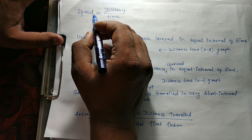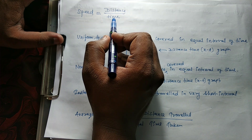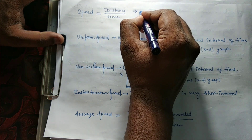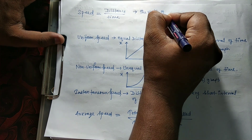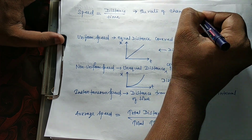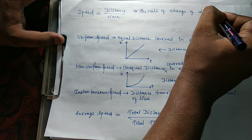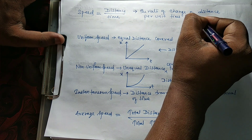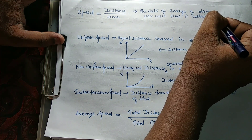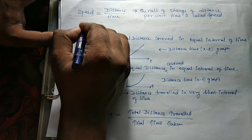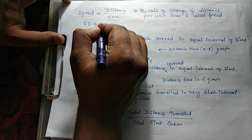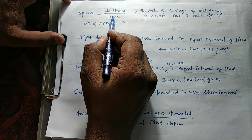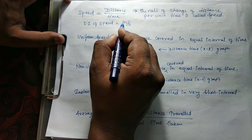First of all we will discuss about speed. As you can see, the formula is distance by time. We can define it like this: speed is the rate of change of distance per unit time. The SI unit for distance is meter and the SI unit for time is second, so the SI unit of speed will become meter per second.